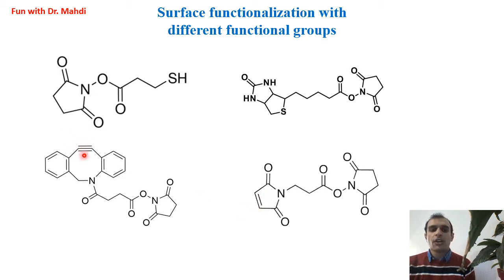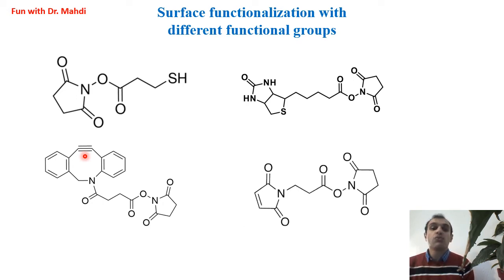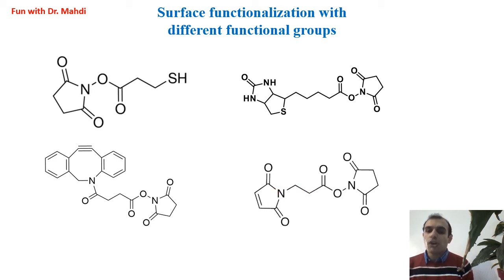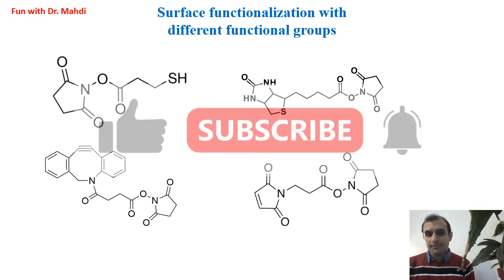When we cover the surface with alkyne, we can do thiol-ene or SPAAC — strain-promoted alkyne-azide cycloaddition — two different types of click reaction. And also, when we cover the surface with maleimide after doing the NHS ester-amine reaction, we can do thiol-ene Michael cycloaddition, which is another type of click reaction.